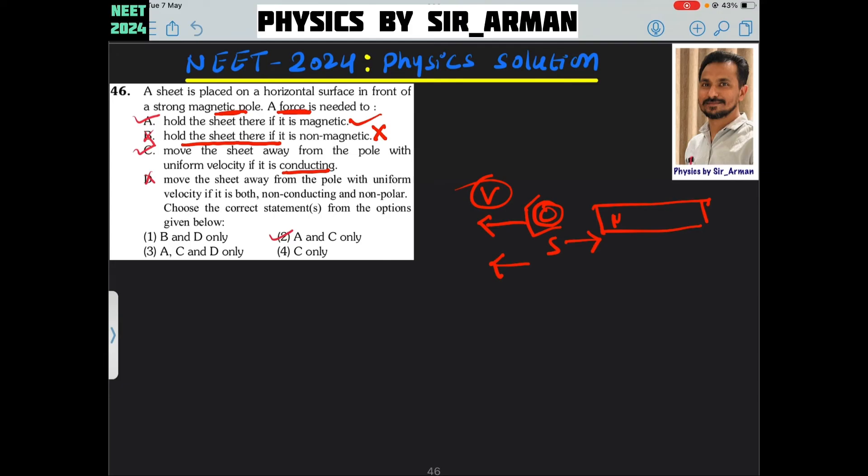D, move the sheet away from the pole with uniform velocity if it is both non-conducting and non-polar. If it is non-conducting, then no force will be needed because no eddy currents will generate. So D is incorrect and B is also incorrect. So correct options are A, B, and C.